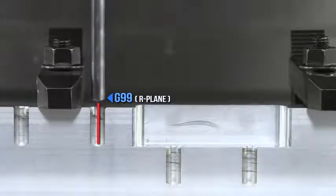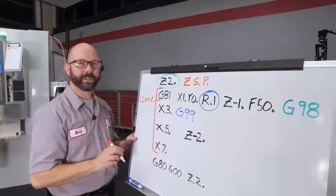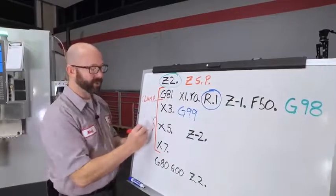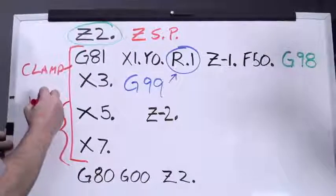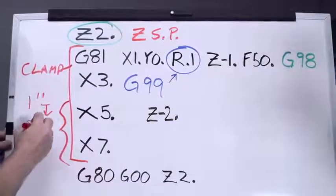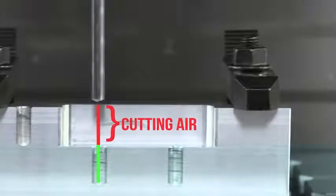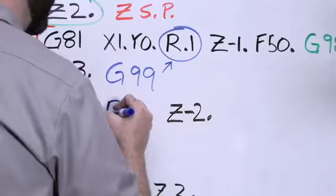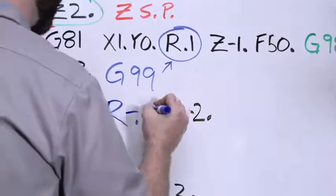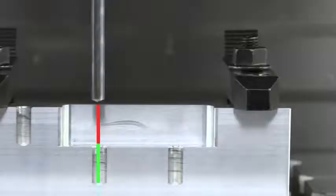For holes three and four, we're going to do something a little different. These holes are special. They're actually sitting at the bottom of a one inch deep pocket. If we feed all the way from point one inch above the part, we're going to be cutting a lot of air. So, we're going to change our R plane to R minus point nine. This is going to fit the part perfectly.